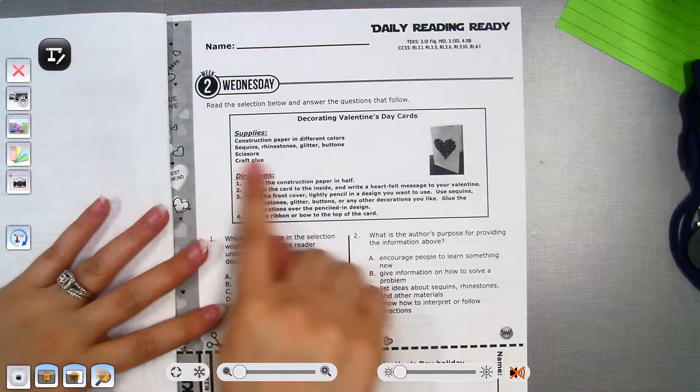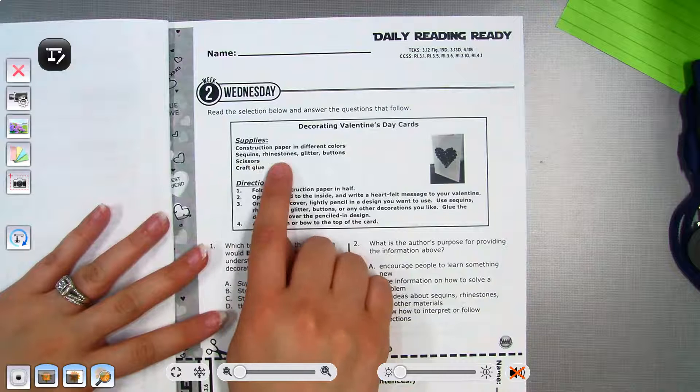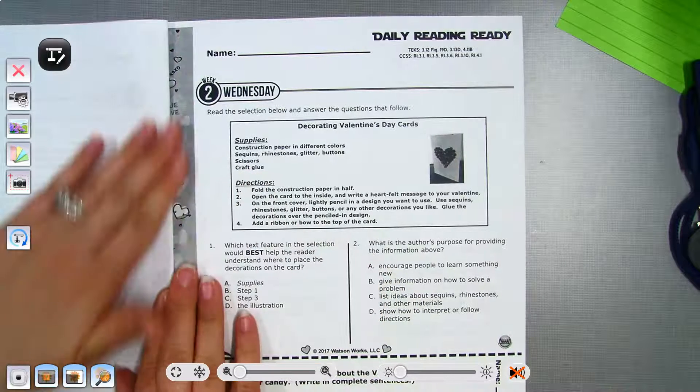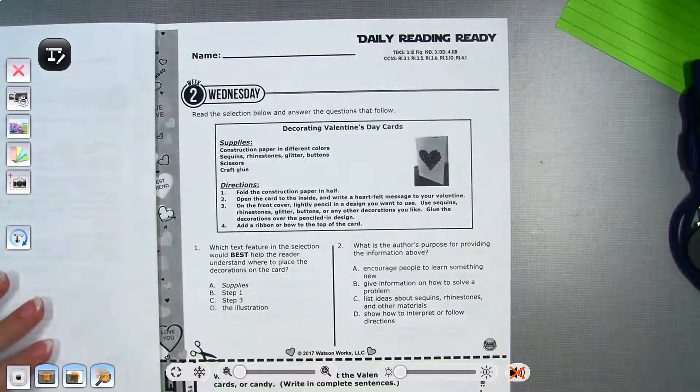So our title is Decorating Valentine's Day Cards. And it tells us our supplies: construction paper in different colors, sequins, rhinestones, glitter, buttons, scissors, and craft glue. So those are the items you will need to make this card.